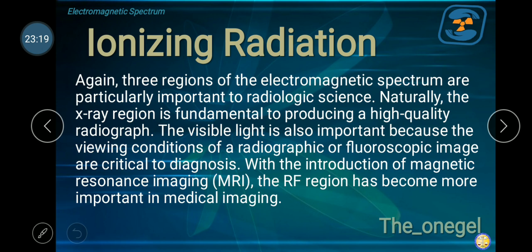As a closing, I said we're just talking, chilling in this module. We'll take it harder in module 11 and 12. Three regions of electromagnetic spectrum are particularly important to radiologic science. Naturally, the x-radiation, of course, because that is mostly of our profession in diagnostic radiography. This is fundamental to producing high-quality radiograph. The visible light is also important because the viewing conditions of a radiographic or fluoroscopic image are critical to diagnosis. And with the introduction of magnetic resonance imaging, we will use radiofrequency. Magnetic resonance or MRI has become more important in medical imaging.